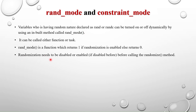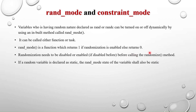Randomization needs to be disabled or enabled before calling the randomize method. If rand_mode is disabled and you call the randomize method, it will not randomize the variable. In order to randomize again, you first need to enable it by calling rand_mode(1), then call the randomize method.